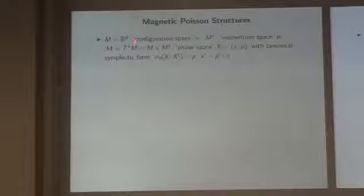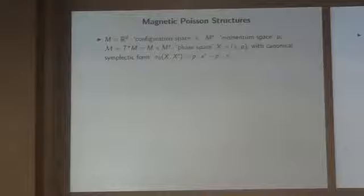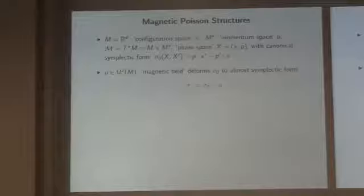If you do everything here globally in this setting, you might want to think that this is some local construction. You might think of generalizations — t-star M can be thought of as a Lie algebra, so you can think of replacing t-star M with some other Lie algebra. There are lots of generalizations. Let's stick to this. Now I put some more data in: I introduce a two-form that I'm going to call a magnetic field.